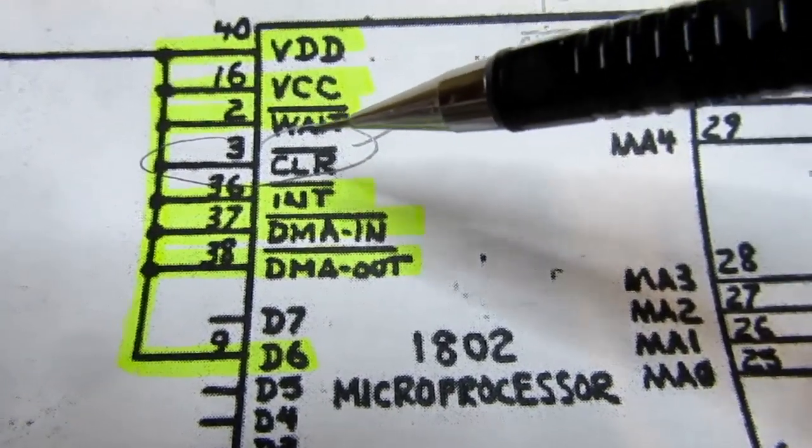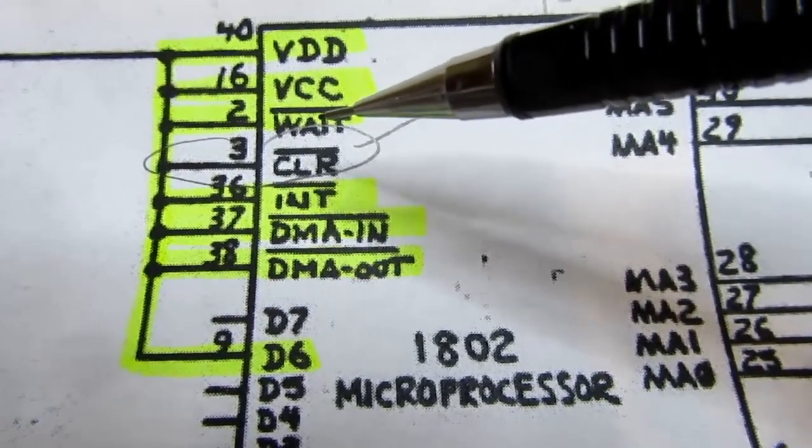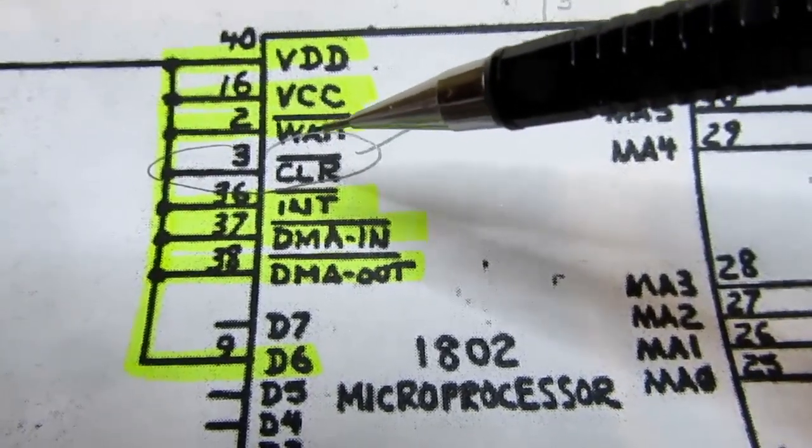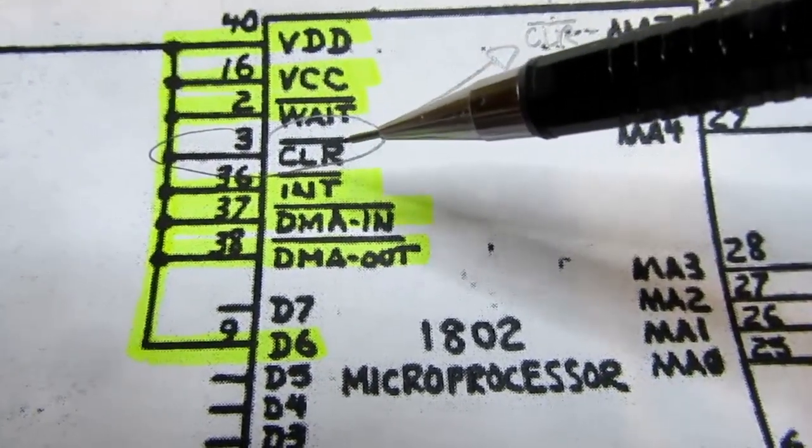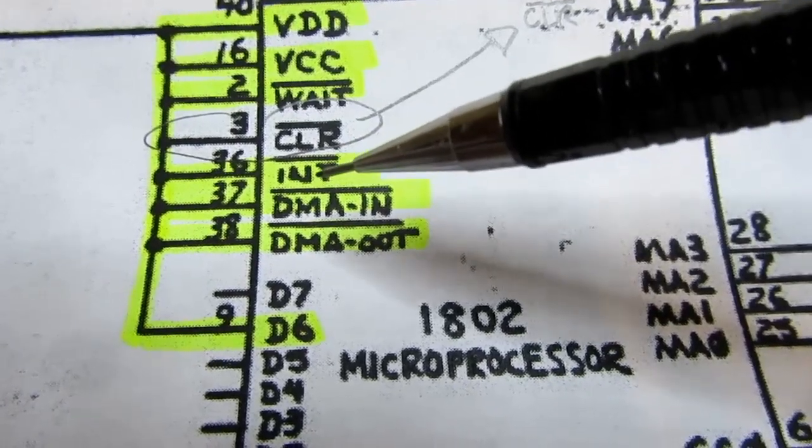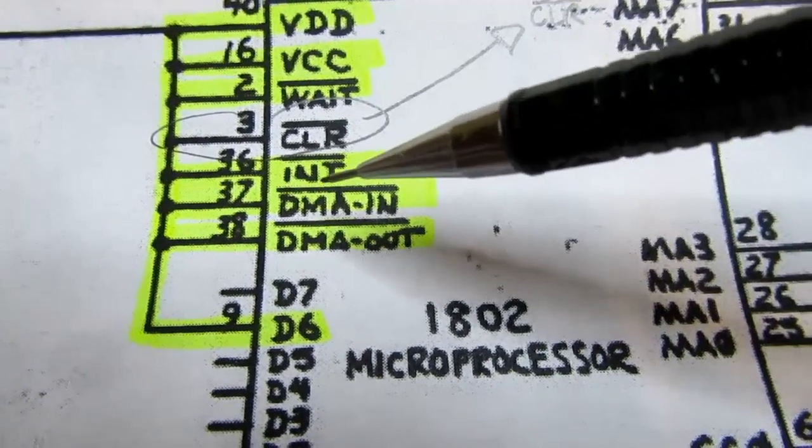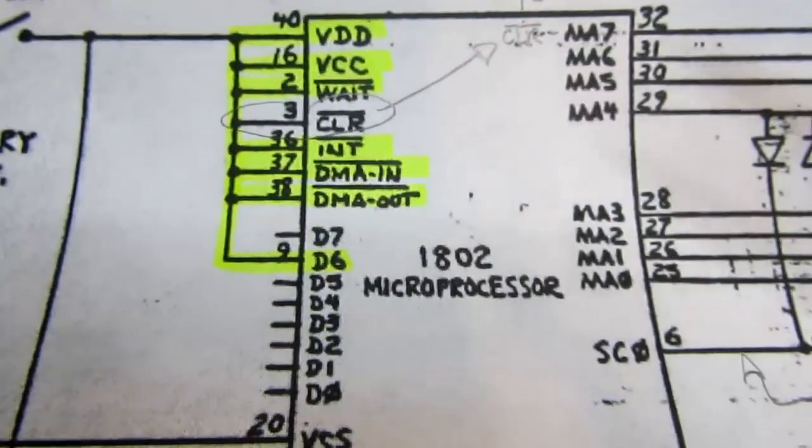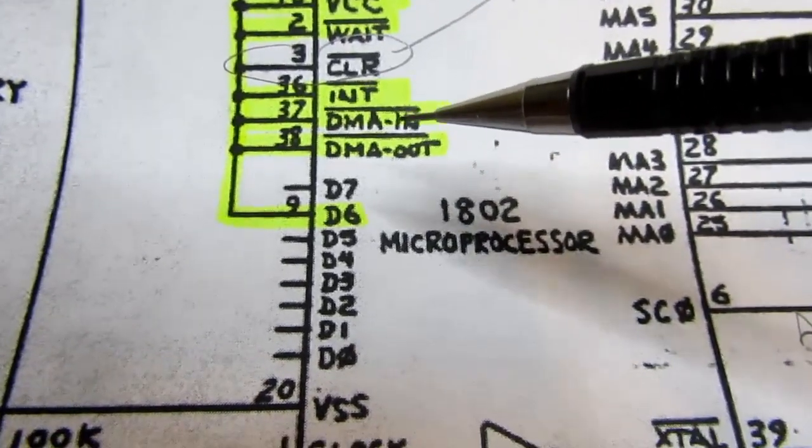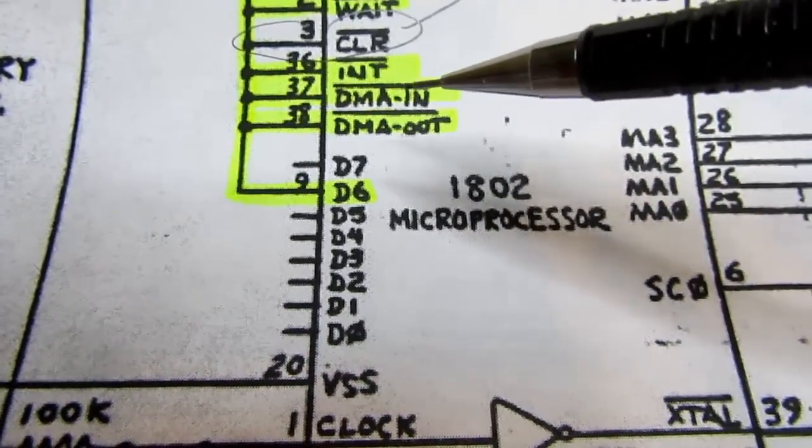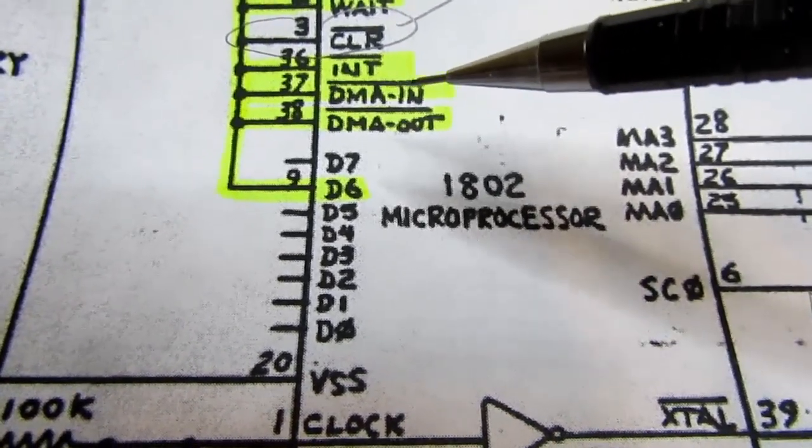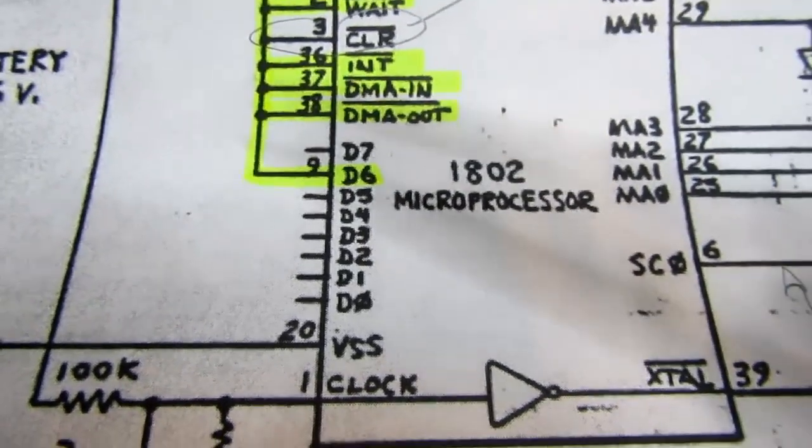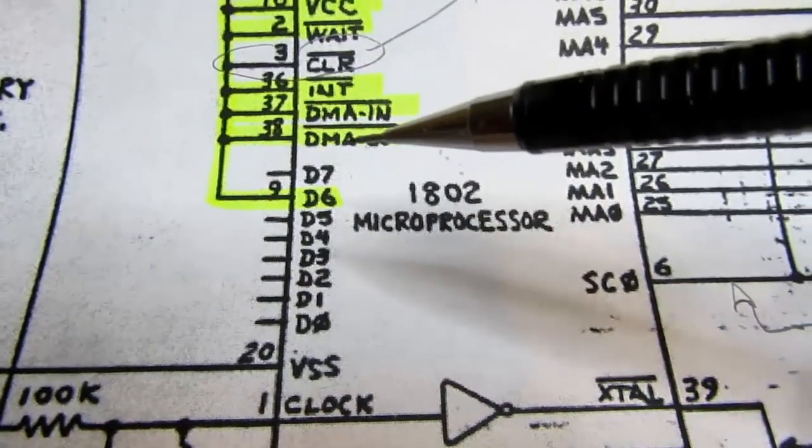The 1802 has a wait input, which is active when it's low. By pulling it up to V+, I'm assuring that the processor will not go into a wait state. There is also an interrupt input, also active low. By pulling it high, I'm assuring that the 1802 won't try to do an interrupt. The 1802 has a built-in DMA function, and there are two dedicated pins for that. The DMA in and the DMA out, but those are both inputs and they're both active low. So pulling those high, make sure the 1802 does not try to do a DMA function.